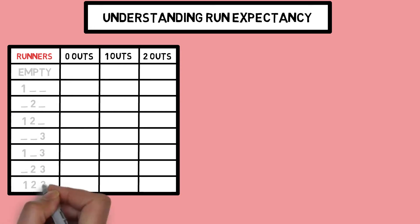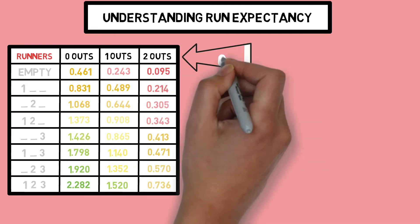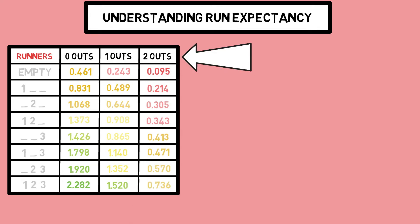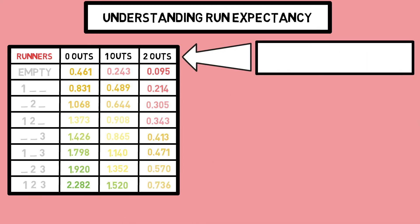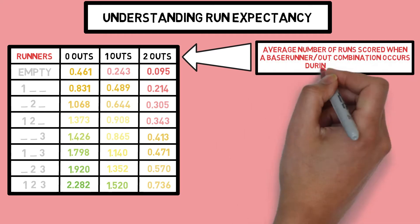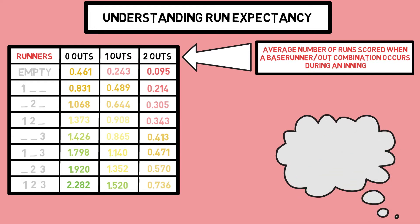The run expectancy chart looks something like this, showing the probable number of runs scored if any of the occurrences happen in an inning based on previous data. It accounts for all base runner combinations as well as each out scenario. What this chart tells us is the average number of runs scored in each situation as it has happened in the past. So of course it isn't a guarantee that you will score a run with no outs and a runner on second base, but it is likely that you will score at least one.